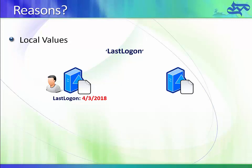The lastLogon attribute also exists on all other domain controllers, but since the domain controller on the right has not authenticated the user, it has no information for that attribute — it will be null. This means the domain controller on the left stores more information in its database, which is one of the reasons why the size of NTDS.DIT differs between domain controllers.